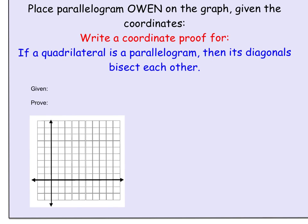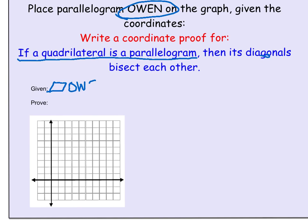In this video, we're going to write a coordinate proof proving that if a quadrilateral is a parallelogram, then its diagonals bisect each other. In order to do this, we're going to first write down the given, and the given is that the quadrilateral is a parallelogram. The parallelogram that we're using is Owen, so we are going to say parallelogram Owen is the given.